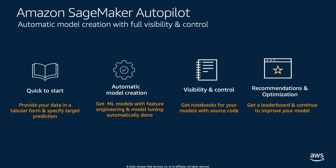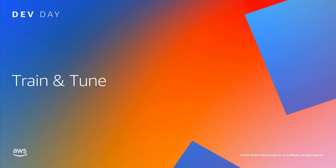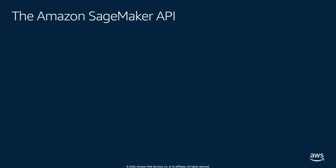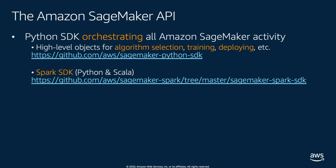Once you have a model — whether from Autopilot or the Marketplace — you're pretty much done. But if you went for a built-in algorithm, framework, or your own container, you need to train and tune. The SageMaker API is reasonably simple. All training and deployment activities are done via a Python SDK — the SageMaker SDK — which I call a high-level SDK because the objects you deal with are algorithms, training jobs, and deployment jobs, not servers, VPCs, SSH keys, or infrastructure objects.